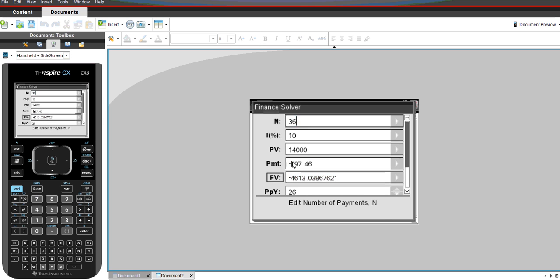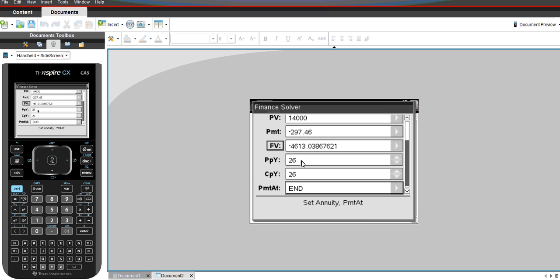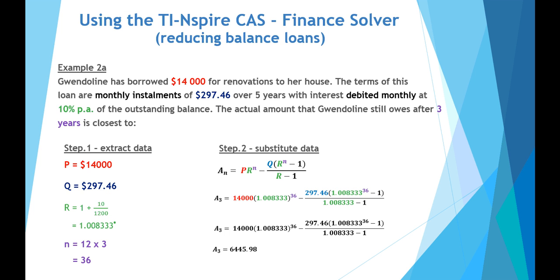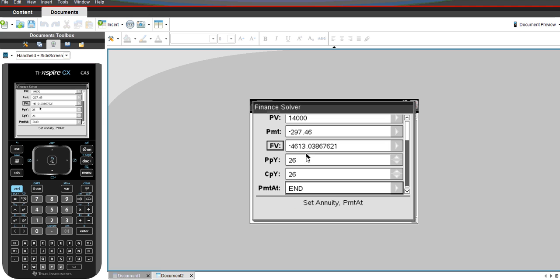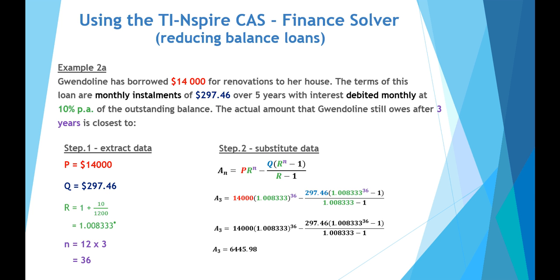Wait a minute. Must be some mistake. 36, 10%, 14,000, minus 297. Let me check. If we go back, we are looking at monthly installments. Bad mistake. We go back to our CAS calculator, and redeem this from 26 to 12 for the number of months. Do a recalculation of our future values, and it comes out to a much more accurate answer of $6,446.13. You notice that's slightly different with the value here that we have from an annuities formula, and that's from the rounding error occurred when we have a recurring digit.